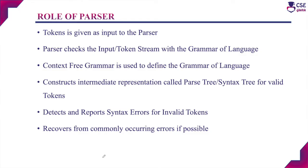The compilation process is carried out in six different phases of the compiler: lexical analyzer, syntax analyzer, semantic analyzer, intermediate code generator, code optimizer, and code generator.